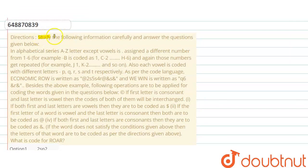The question is: Study the following information carefully and answer the question given below. In alphabetical series, A to Z letters except vowels are assigned a different number 1 to 6. For example, B is coded as 1, C is coded 2 and H is coded 6. And again, those numbers get repeated.